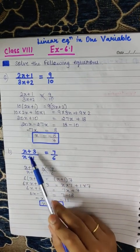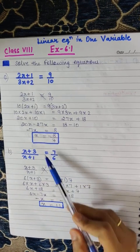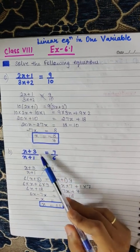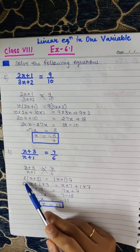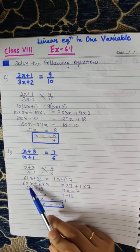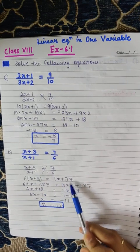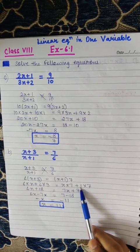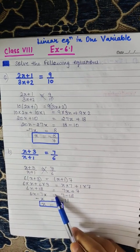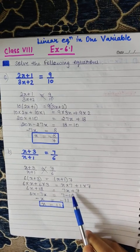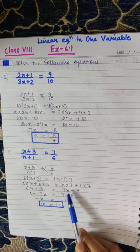Next question: x plus 3 by x plus 1 is equal to 7 by 6. Similarly, cross multiply it. Multiply x plus 3 by 6 and x plus 1 by 7. On multiplying 6 by x plus 3, we get 6x plus 18. On multiplying x plus 1 by 7, we get 7x plus 7.